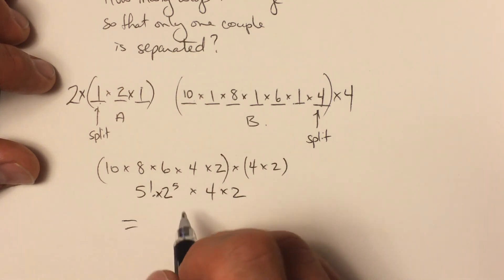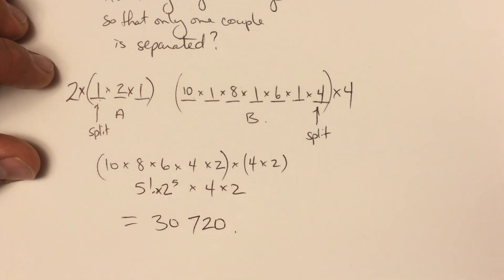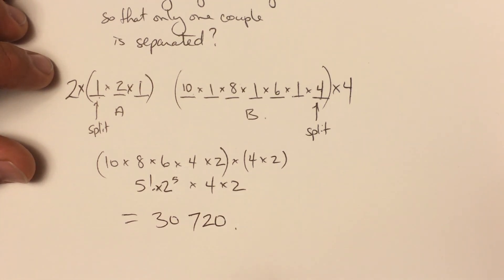Anyway, multiply that whole thing out: 30,720 arrangements where only one couple doesn't get to sit together and the remaining couples sit in adjacent seats. And that's the whole thing.